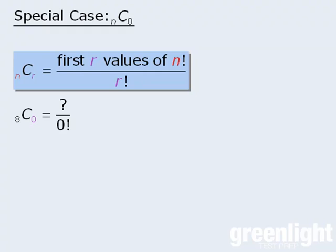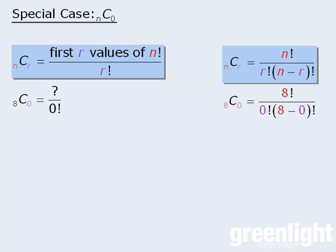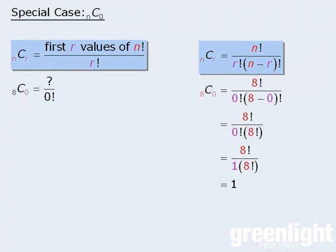Now if that explanation feels inadequate, let's evaluate 8 choose 0 using the original formula. So we'll replace n and r with 8 and 0 to get the following. And now we can simplify this to get 8 factorial over 0 factorial times 8 factorial. And since 0 factorial is equal to 1, we can see that 8 choose 0 evaluates to be 1. So in general, we can say that n choose 0 will equal 1.